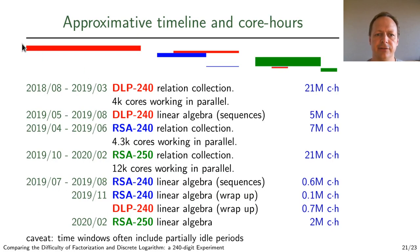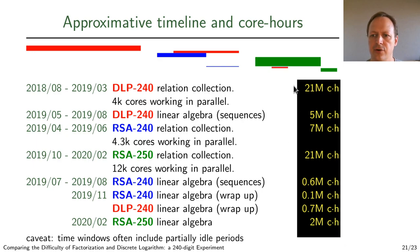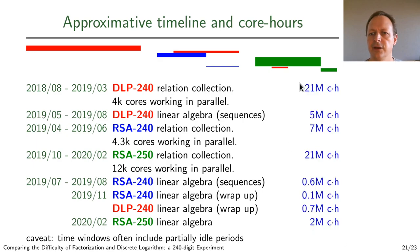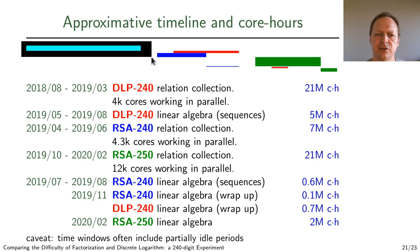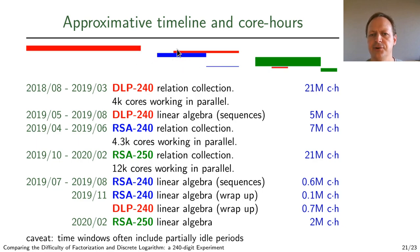I can draw an approximative timeline of our computation. Here I have the different steps of the three computations that we are reporting in millions of core-seconds. This is the hardness of each step. We started with relation collection for DLP, and then relation collection for RSA-240. Linear algebra was in the summer last year and finished in the fall. By the time we were nearing completion of our records, it was pretty clear that we were going to have some of our allocation time left. So we started RSA-250 in fall 2019, and this was over in February 2020.